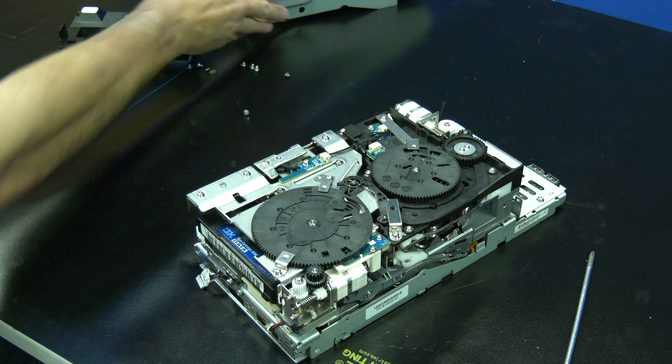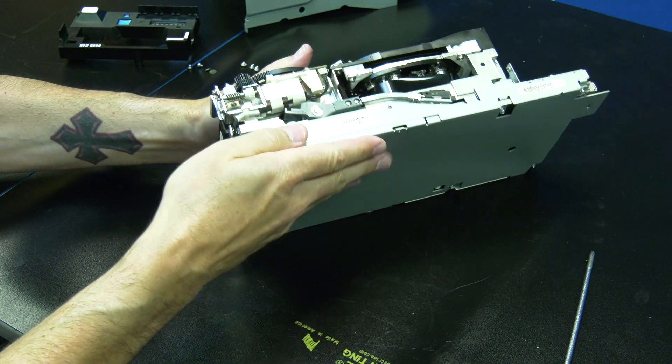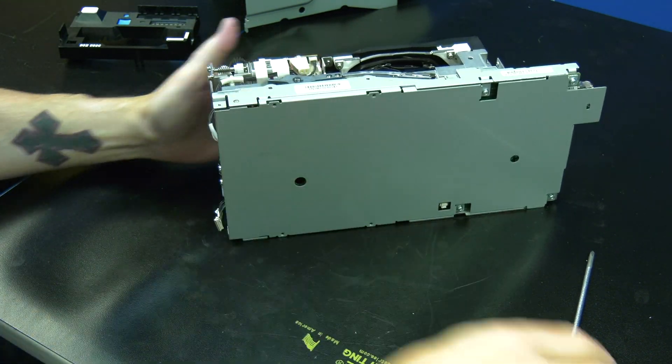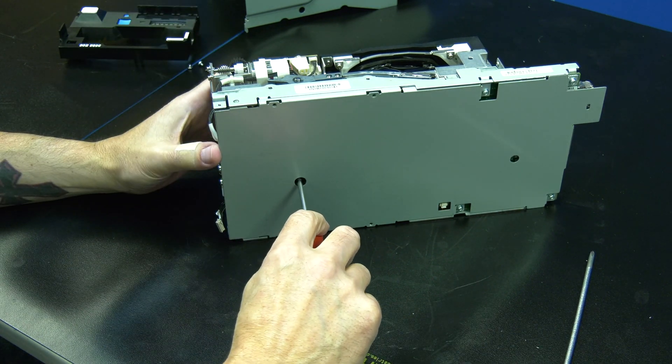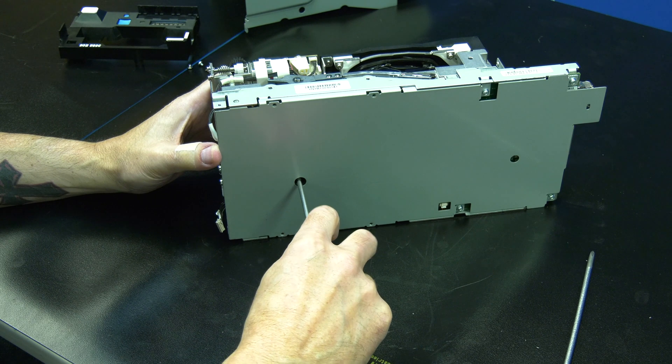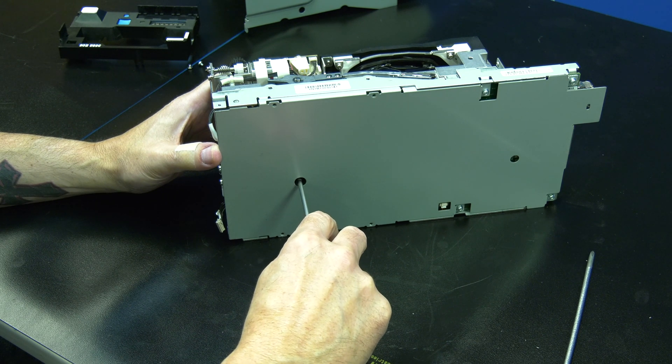At this point, you will need to choose if you want to rewind the tape all the way into the cartridge or if you just want to cut the tape. If you want to rewind the tape all the way, keep watching from here. If you want to just cut the tape and remove it, please skip ahead in this video.